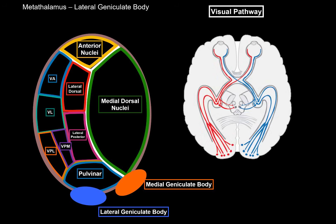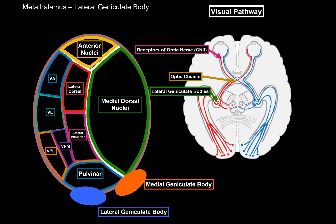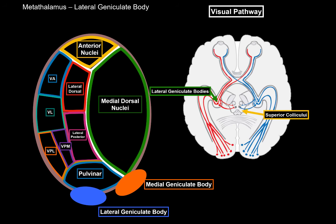The lateral geniculate body is related to vision and the visual pathway. Receptors in the retina feed into the optic nerve; half the fibers cross to form the optic chiasm, then synapse with the lateral geniculate bodies. From there, fibers go back to the occipital lobe where the primary visual cortex gives conscious awareness of what you see. Fibers also go from the lateral geniculate bodies to the superior colliculi through the brachium of the superior colliculus, which coordinate movement of the eyes and neck through the tectospinal tract.